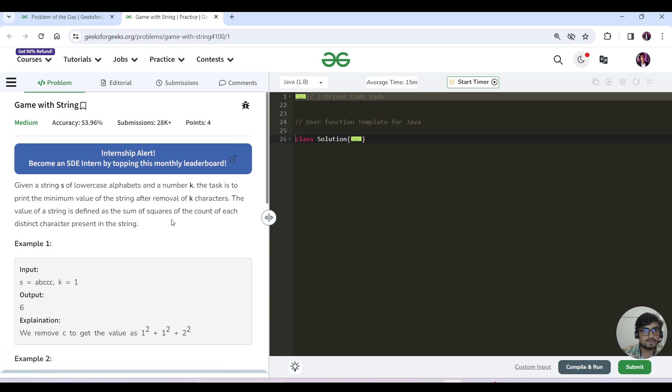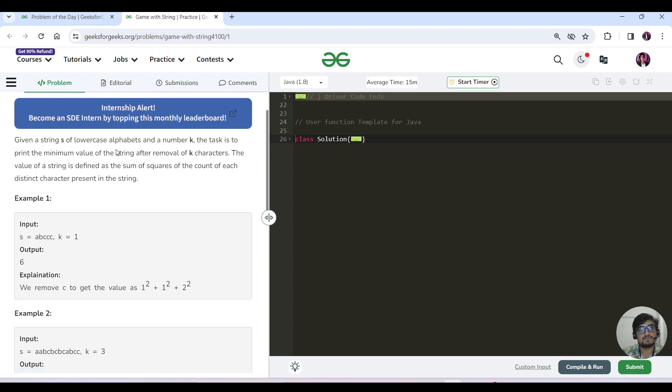So today's question name is Game with Strings, a medium category question. We have been given a string of lowercase alphabets. Here we have declared that alphabets will be in lowercase and a number k.